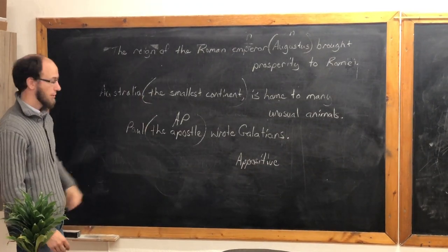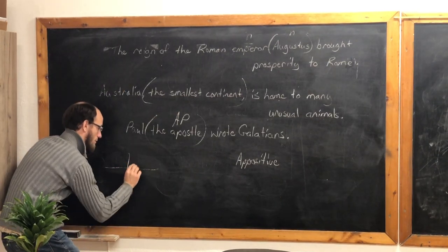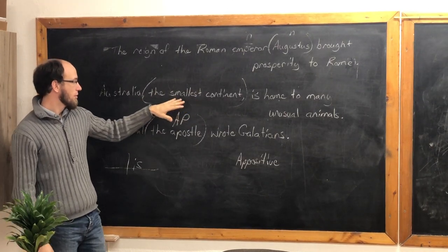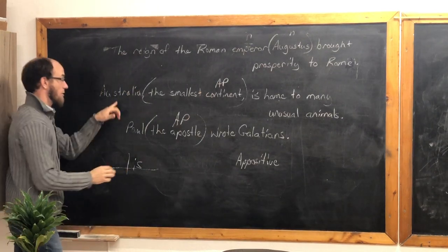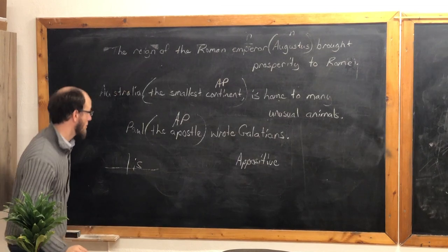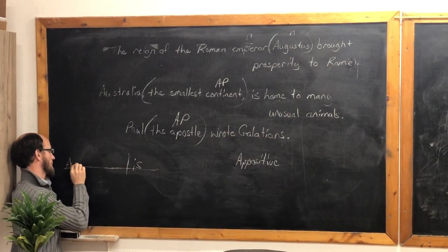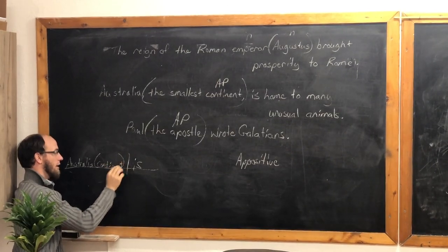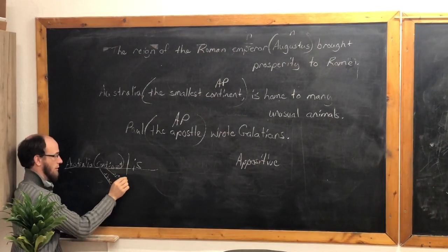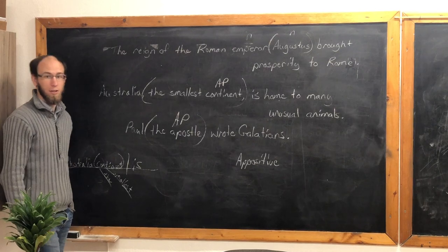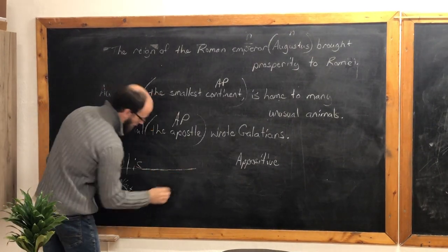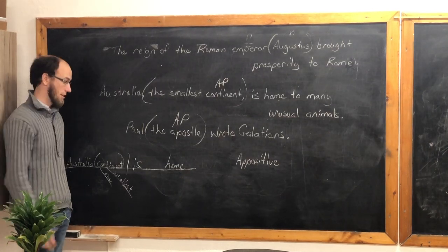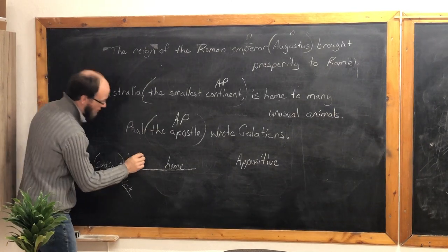Let's diagram the second sentence. What's the verb? Is. Who or what is? Australia. The actual appositive noun is 'continent' — that's the actual noun. We write Australia and then 'continent' in parentheses after it, with 'the smallest' underneath continent. Australia is home — and since it's a linking verb, always a slanted line between 'is' and 'home.'